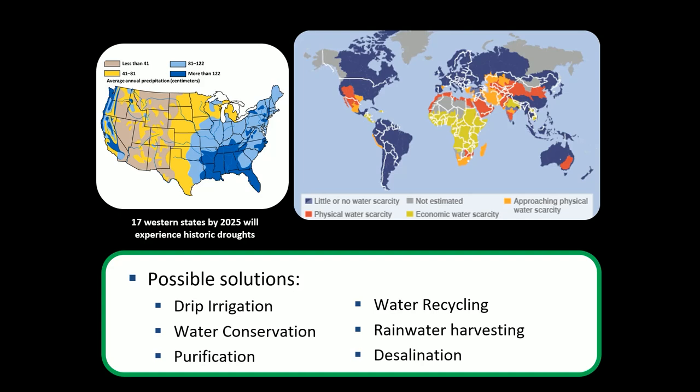Water recycling is taking water that's already been used for one purpose and using it again. For instance, the water that drains out of your dishwasher or clothes washer — there's no reason it has to return directly to the source. Couldn't we use that water for toilets instead of fresh water from the source? You could get multiple uses out of one set of water, because not all water used in homes or businesses needs to be drinking-quality. Some processes would work fine with slightly lower water quality.